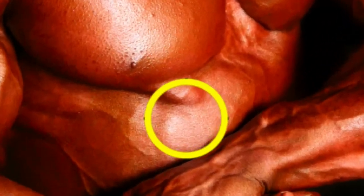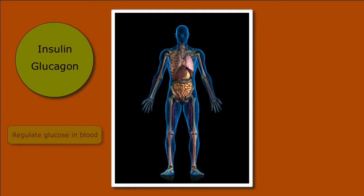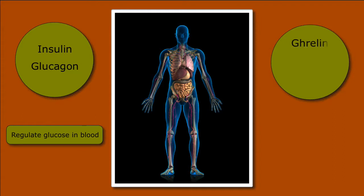Weight, obesity, and fat development in humans are controlled by multiple hormones. In fact, almost every part of your metabolism is under the control of hormones. You may be familiar with insulin and glucagon, which help regulate the amount of glucose in your blood. Other hormones tell us when we're hungry and when we're full. These are chemicals like ghrelin, leptin, and adiponectin.